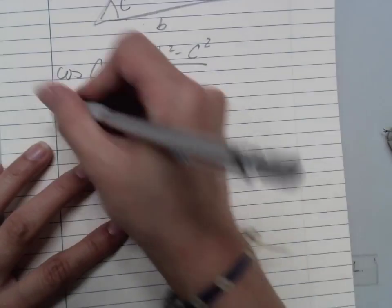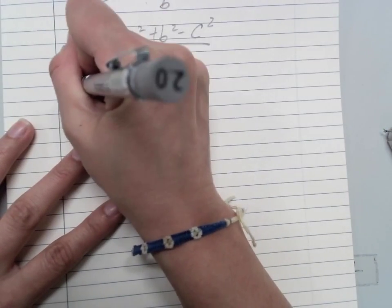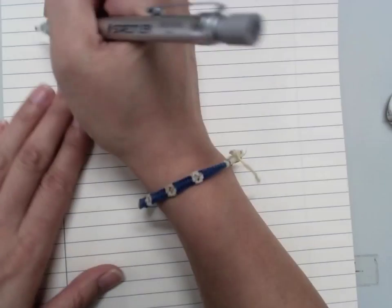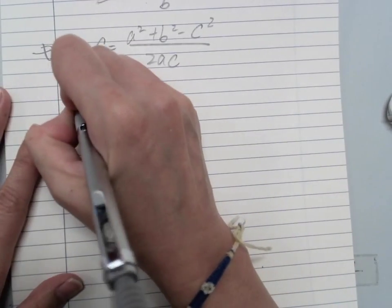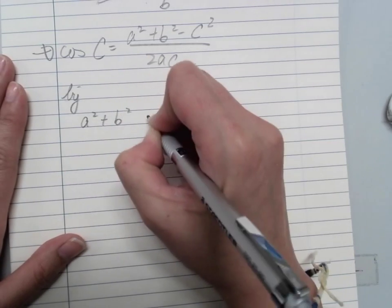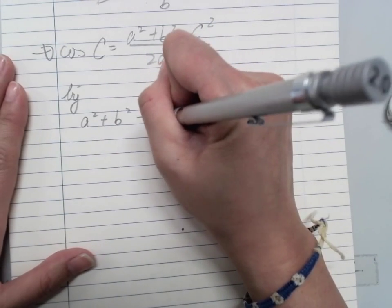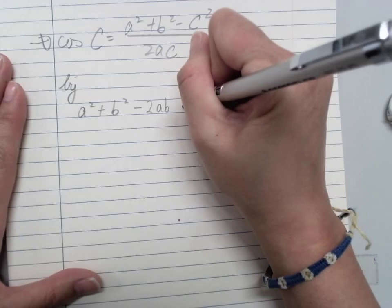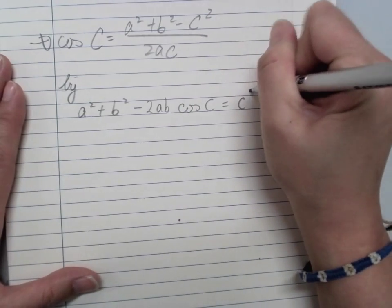You may ask, how does it happen? So we will have C². So how do we get that? We have A² + B² - 2AB cos C = C², yeah?